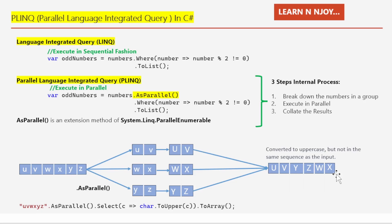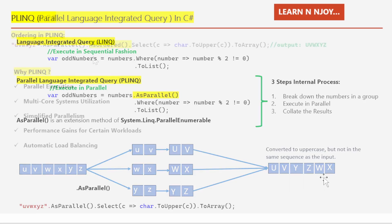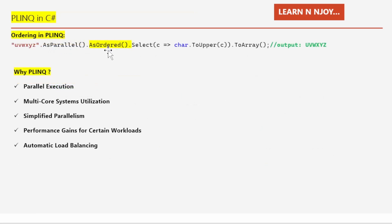How can we get the resulting character set in the same sequence as the input? To maintain order in parallel execution, we use the `.AsOrdered()` extension method immediately after `.AsParallel()`. So the query becomes `"uvwxyz".AsParallel().AsOrdered().Select(c => char.ToUpper(c)).ToArray()`. If you see the output, we get U V W X Y Z in uppercase and in the same sequence as the input. The `AsOrdered()` method ensures that the output sequence matches the input sequence — problem solved.